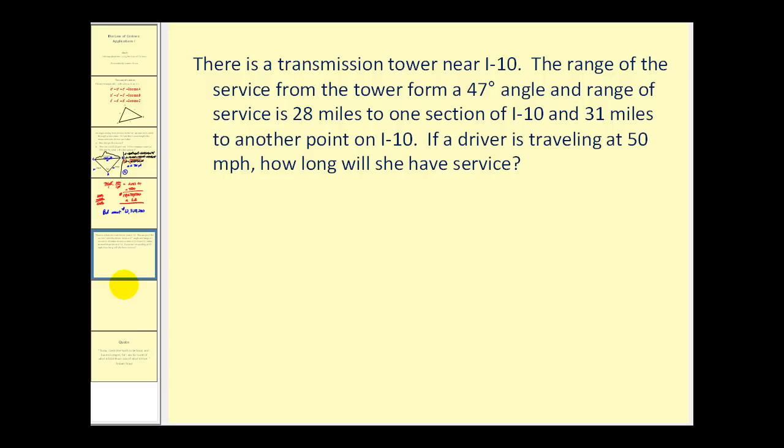So the difficult part about this one is going to be the setup. Let's go ahead and label this as our road, so here's I-10. There's a transmission tower, let's say, to the west, and it forms a 47-degree angle. So the transmission goes out from the tower like this, forming a 47-degree angle. And the range is 28 miles to one section of I-10 and 31 miles to the other. So let's label this 28 miles and this 31 miles.